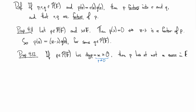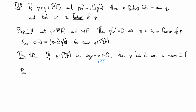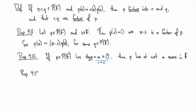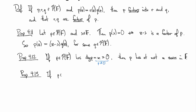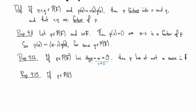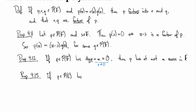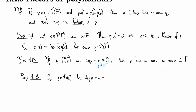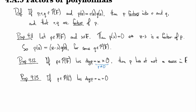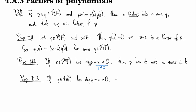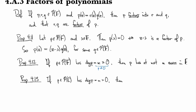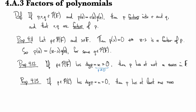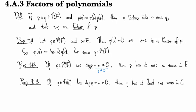For that we have another proposition, and this one is specific to the case when the field is C. So in this case, if we're looking at a polynomial over C and it has a strictly positive degree, then P has at least one zero in C.